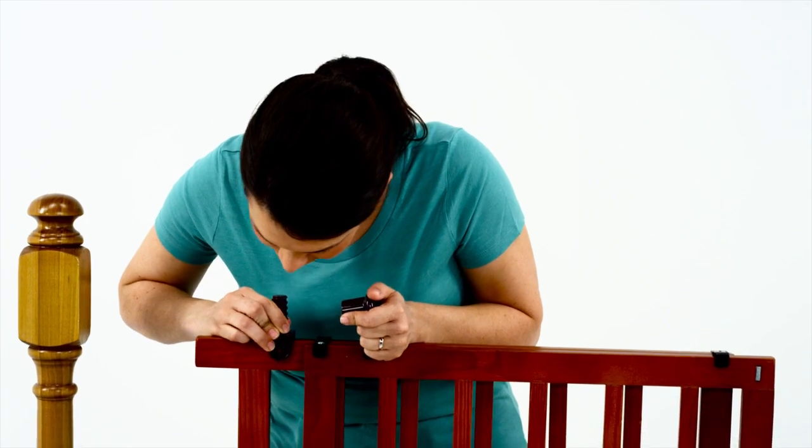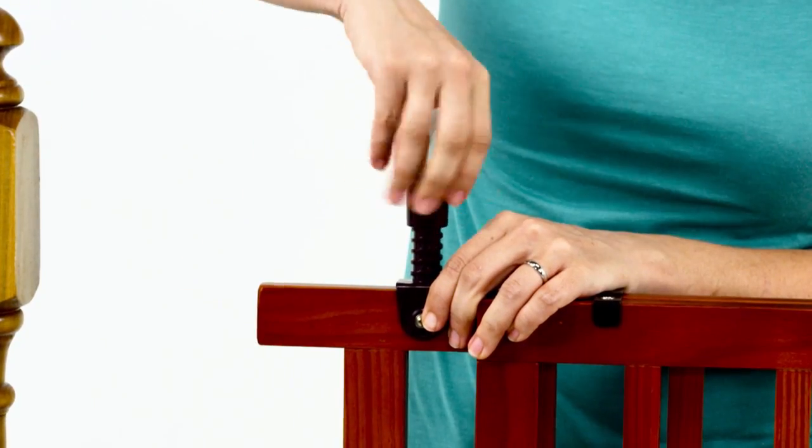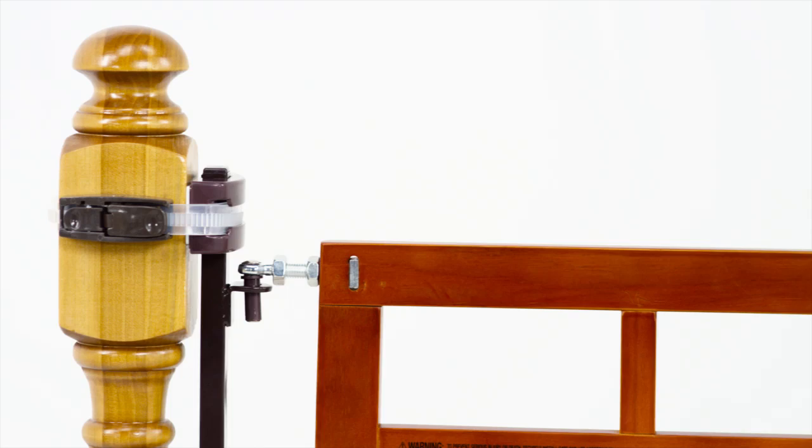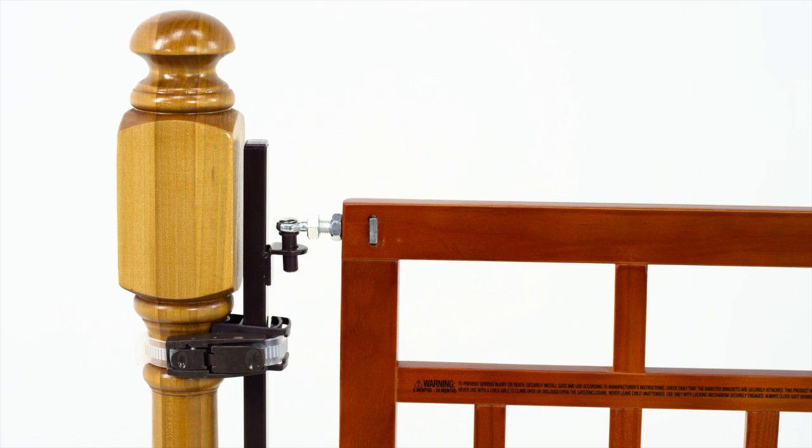To get started, first attach the support foot to the bottom of the gate with the provided fasteners using the pre-drilled hole. Once you know where you will install your gate, choose which of the three options within the hinge assembly best fits your needs.